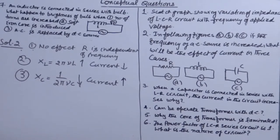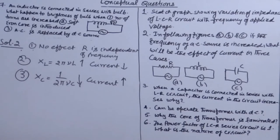Question number three: when a capacitor is connected in series with an LR circuit, the current in the circuit increases. Why?